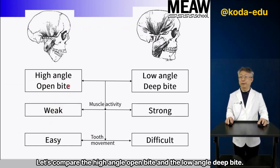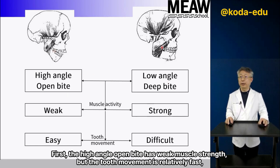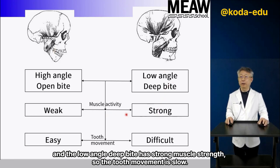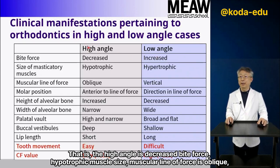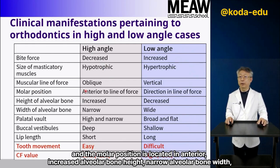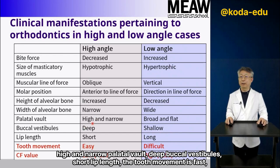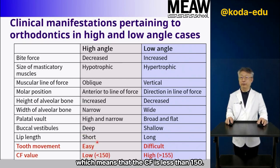Let's compare the high angle open bite and the low angle deep bite. The high angle open bite has weak muscle strength, but tooth movement is relatively fast. The high angle is characterized by decreased bite force, hypotrophic muscle size, muscular line of force is oblique, and the molar position is located anteriorly. It also shows increased alveolar bone height, narrow alveolar bone width, high and narrow palate or vault, deep buccal vestibules, short lip length, and fast tooth movement, which means the CF is less than 150.